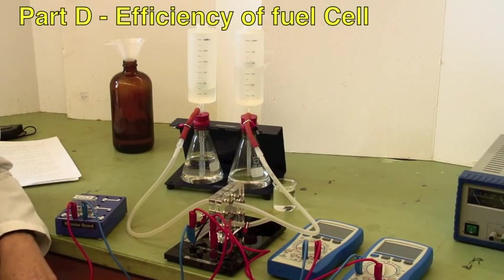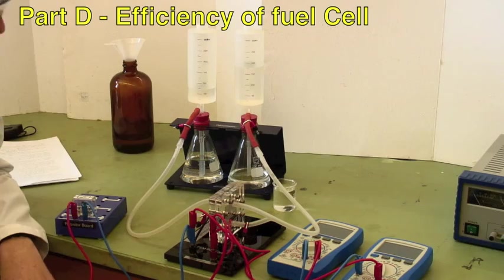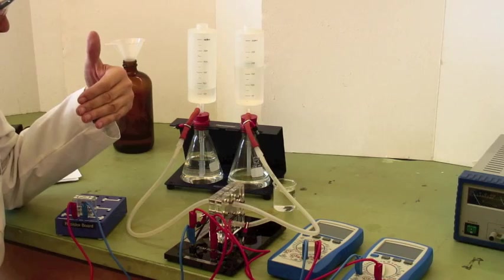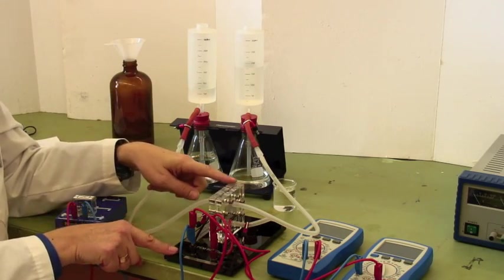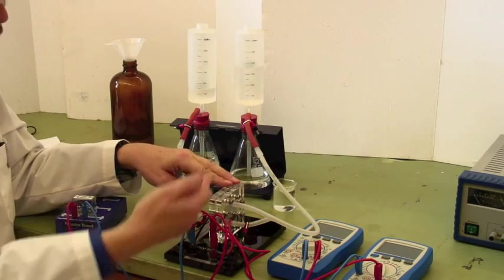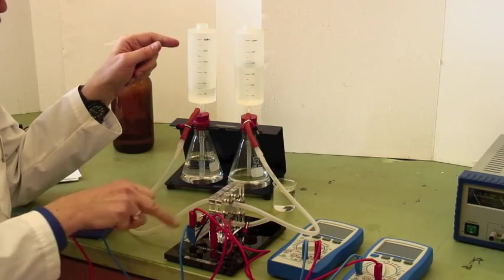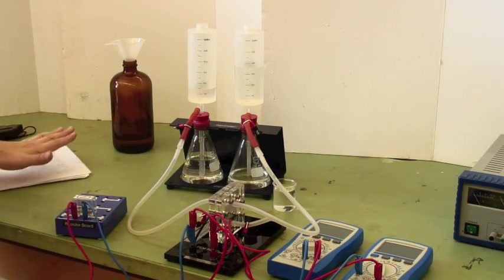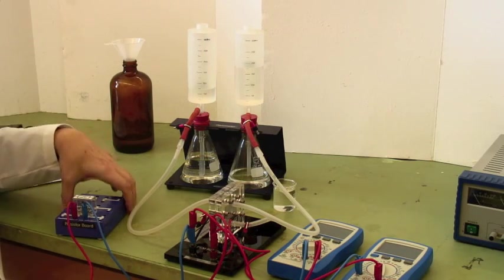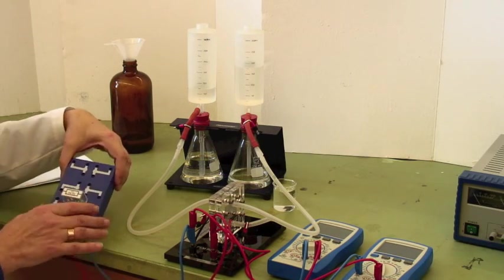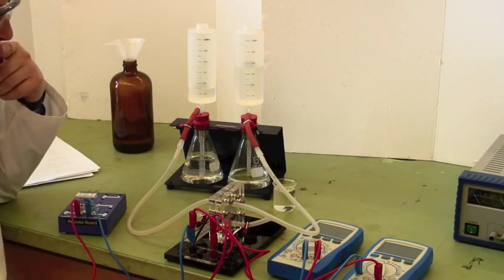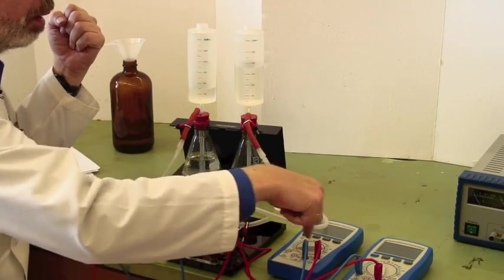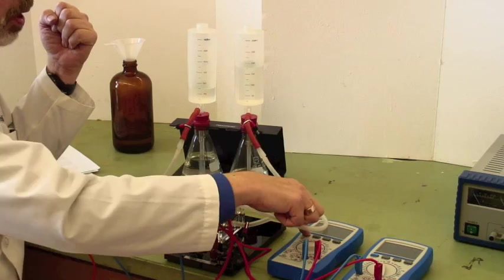Part D of the experiment, we are measuring the efficiency of the fuel cell. You notice we've got gas sitting in the gasometers ready to be used. It is plumbed into the fuel cell itself with hydrogen going into the red side of the fuel cell, oxygen going into the black side of the fuel cell. The electrical cords are all linked up, as you see in circuit diagram number four. At this point, I've got a 1 ohm resistor on it.